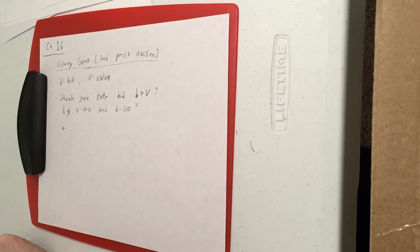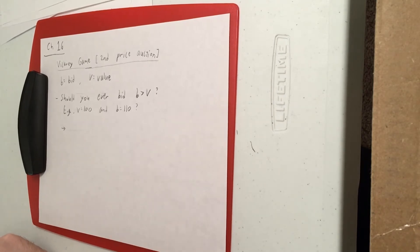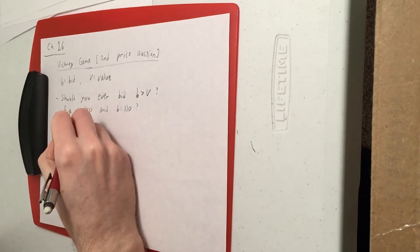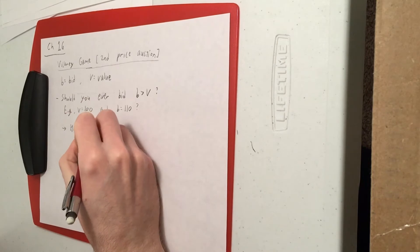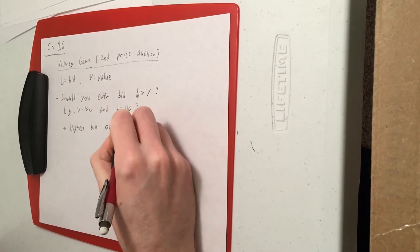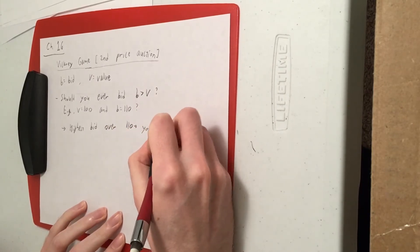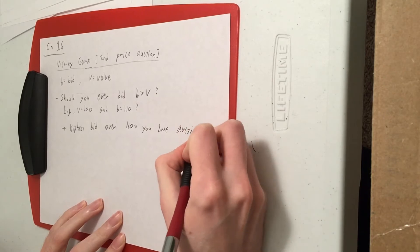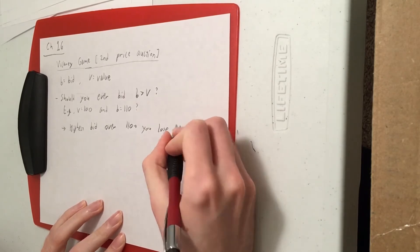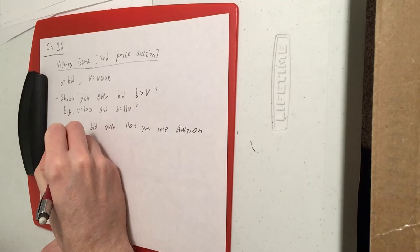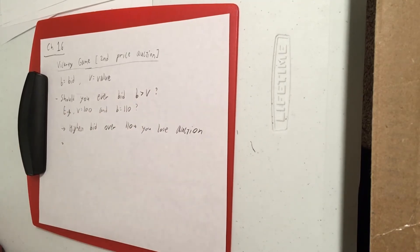Well, if the highest bid from someone else is above 110, it doesn't matter — you lose the auction. But if the highest bid from someone else is below 110, you win the auction, and there are a couple of possibilities for how that can affect your payoff.